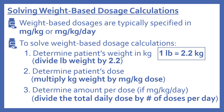Now we'll talk about how to solve weight-based dosage calculations. Weight-based dosages are typically specified in milligrams per kilogram or milligrams per kilogram per day. To solve them: first, determine the patient's weight in kilograms; next, determine the patient's dose by multiplying kilogram weight by the mg/kg dose; then determine the amount per dose if the dosage is in mg/kg/day by dividing the total daily dose by the number of doses per day.